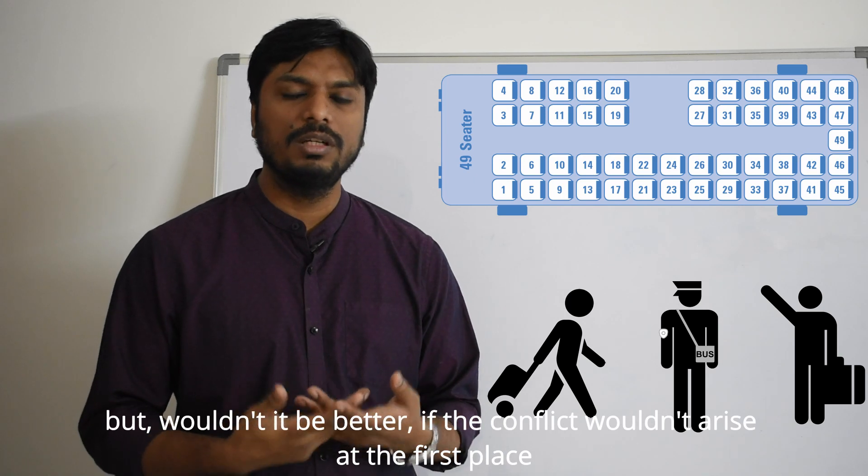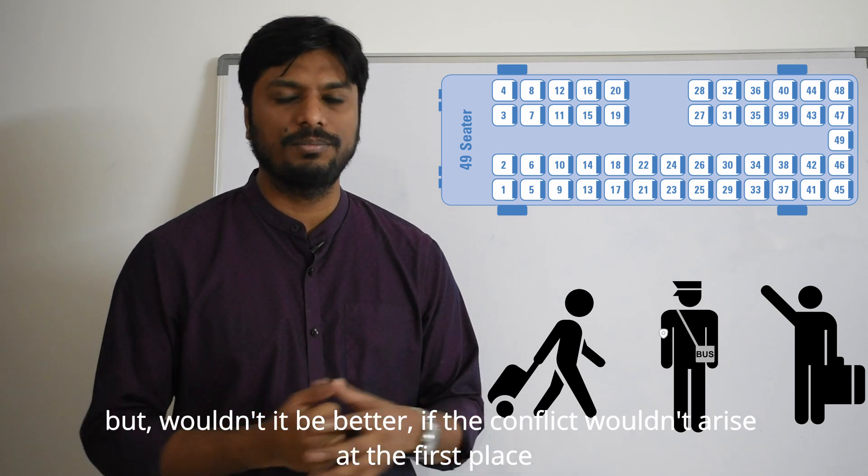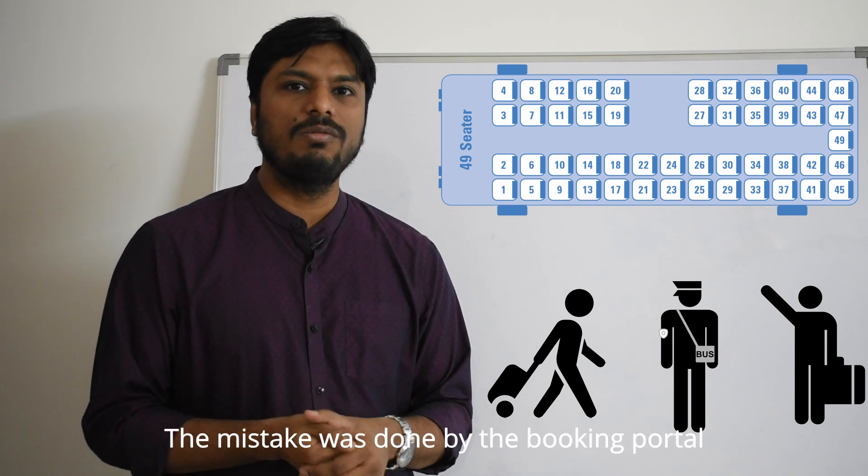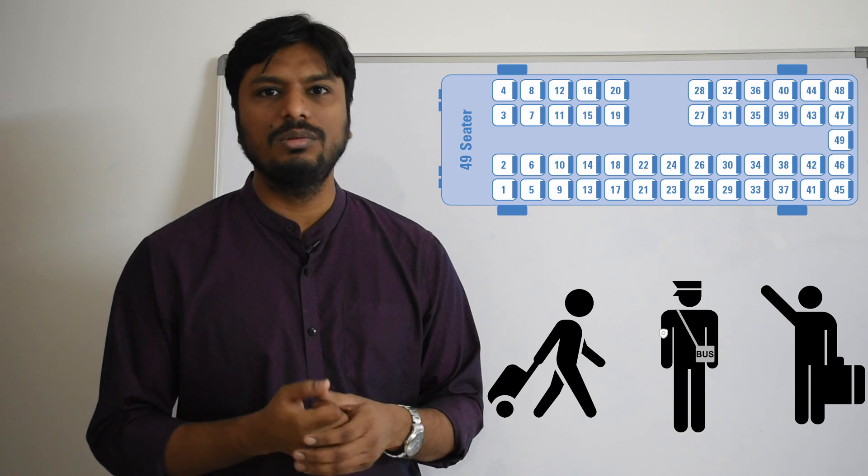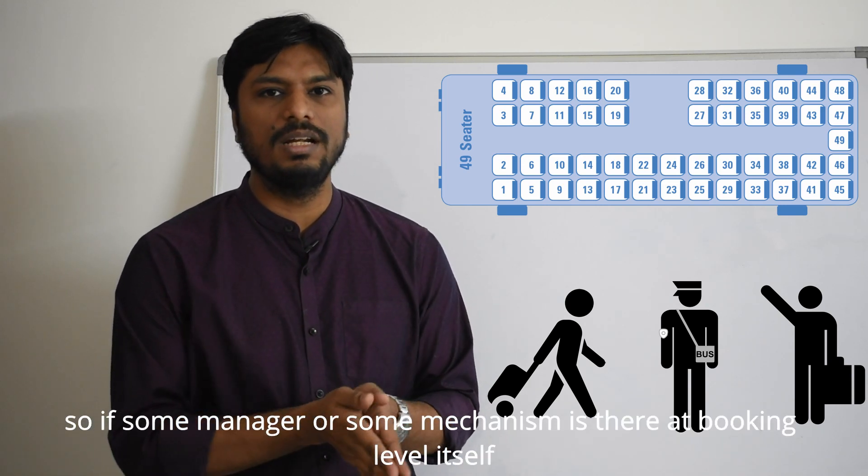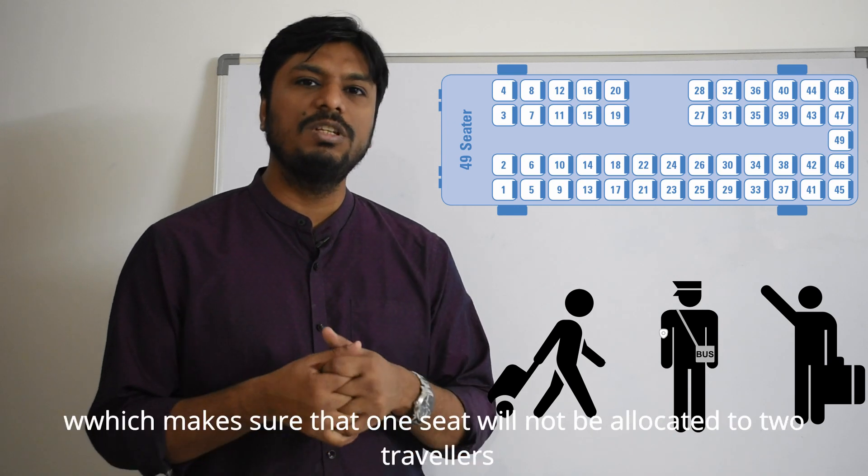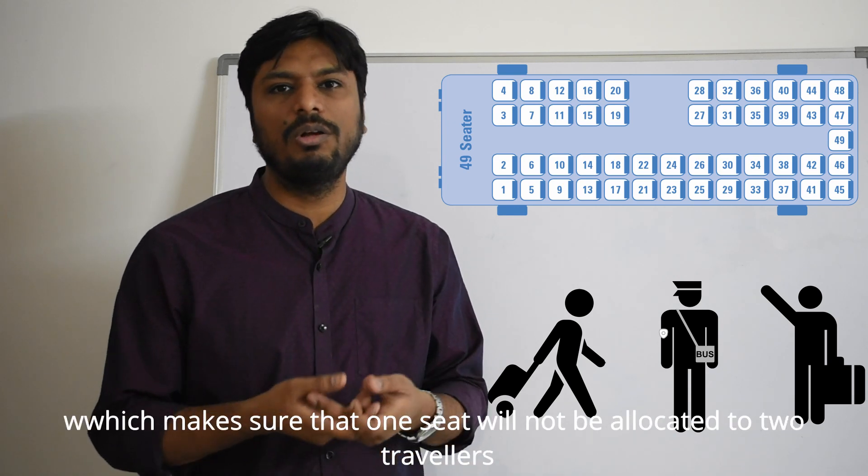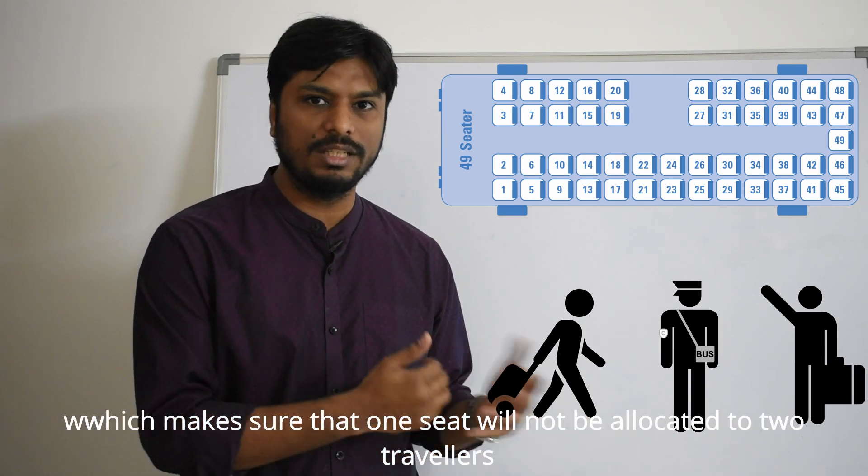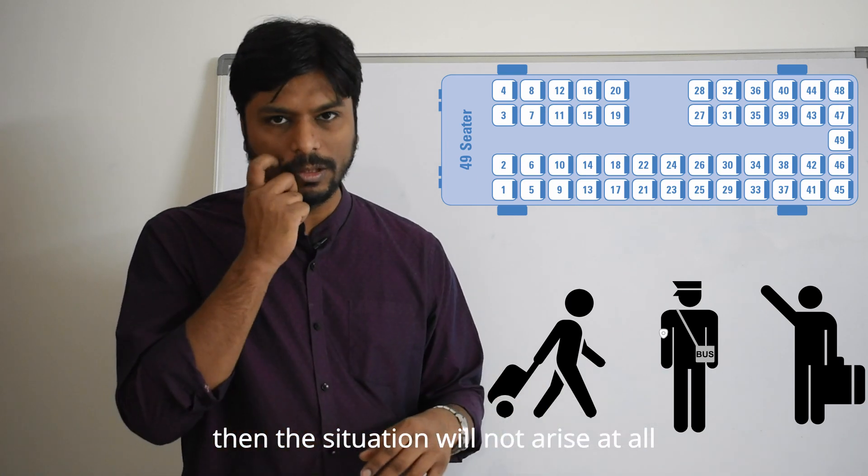But wouldn't it be better if the conflict wouldn't arise in the first place? The mistake was done by the booking portal. So if some manager or some mechanism is there at the booking level itself which makes sure that one seat will not be allocated to two travelers, then the situation will not arise at all.